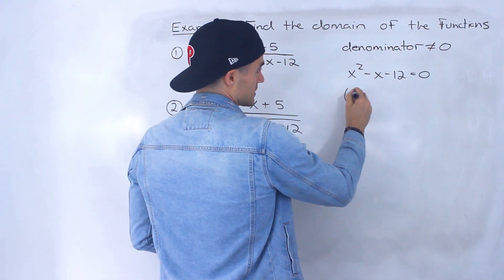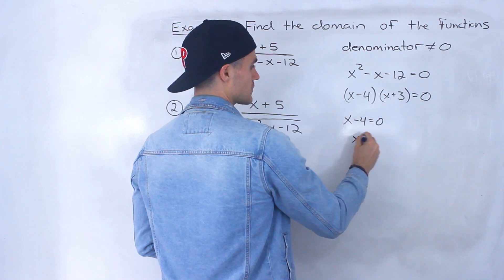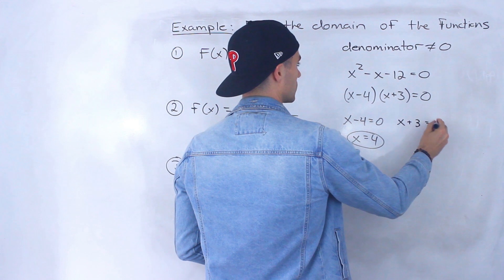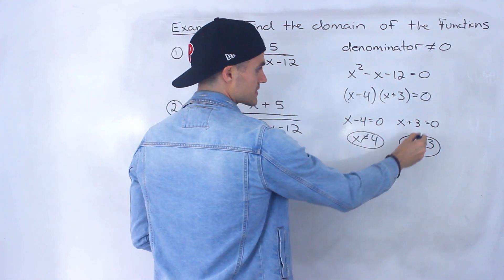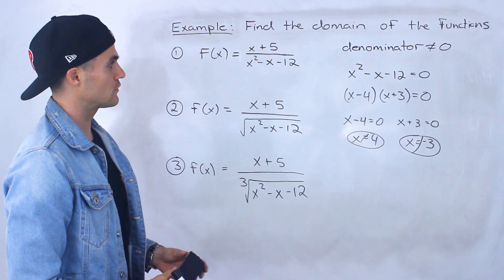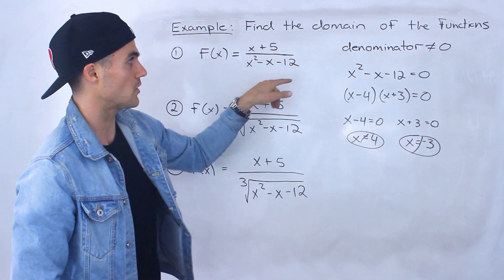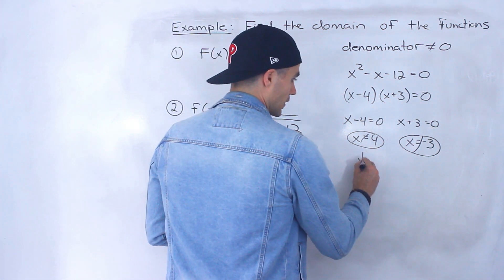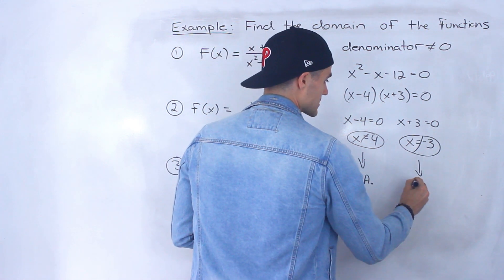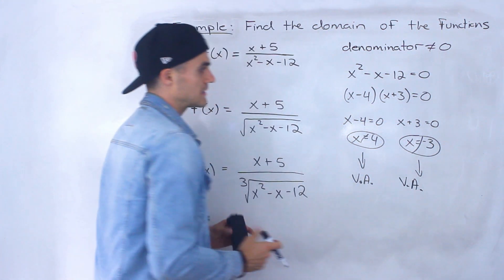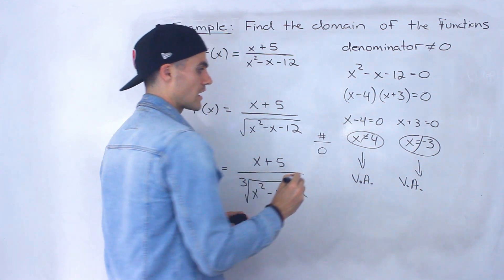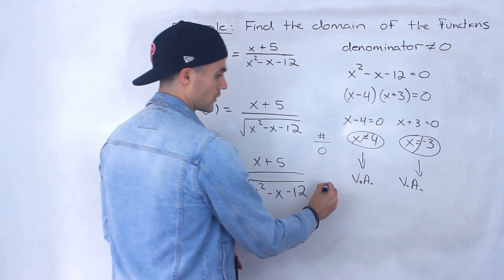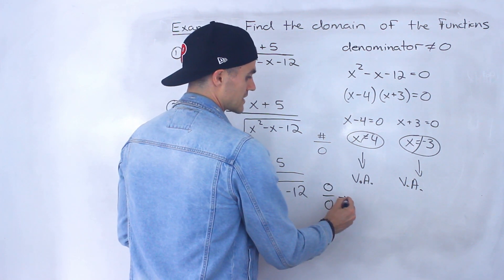We can factor this pretty easily: x squared minus x minus 12 equals x minus 4 times x plus 3. That equals zero when x minus 4 equals zero, so x equals 4, or when x plus 3 equals zero, so x equals negative 3. For this function, x cannot equal 4 and x cannot equal negative 3. At those x values the denominator is zero, and graphically both of these would be vertical asymptotes, since at those x values there's a nonzero number in the numerator — a number divided by zero means a vertical asymptote.